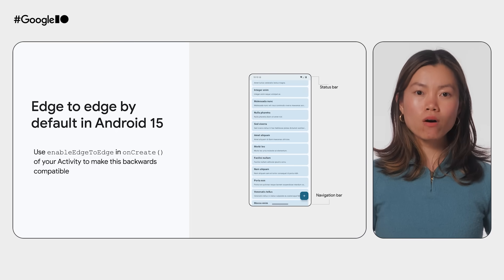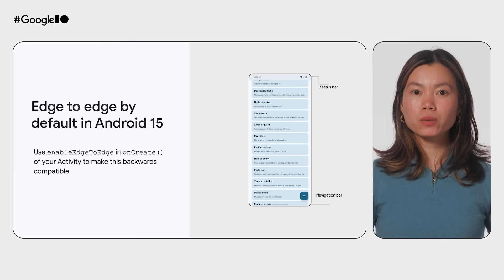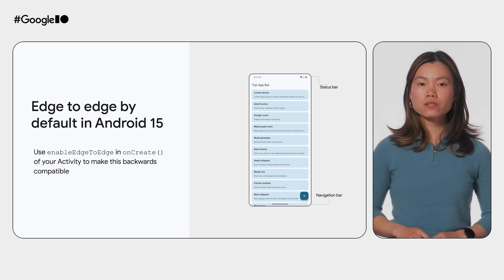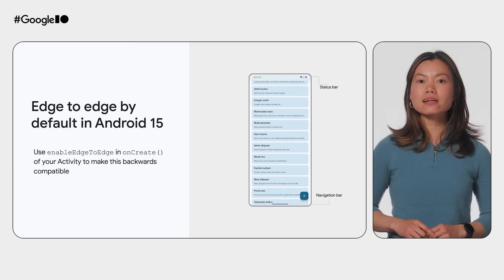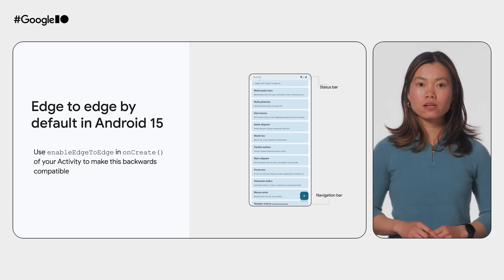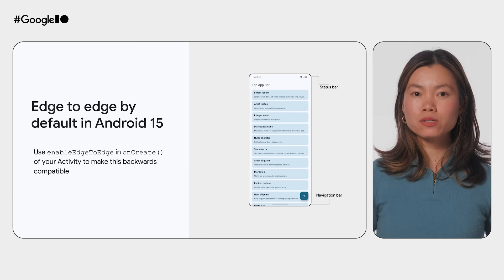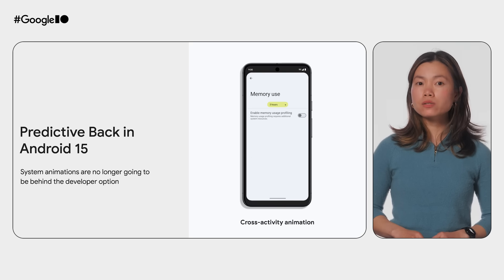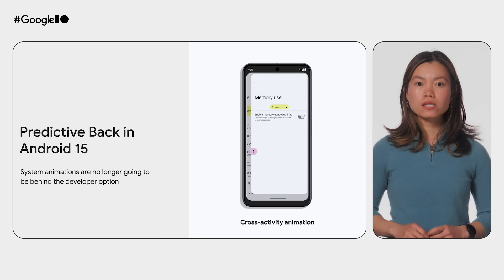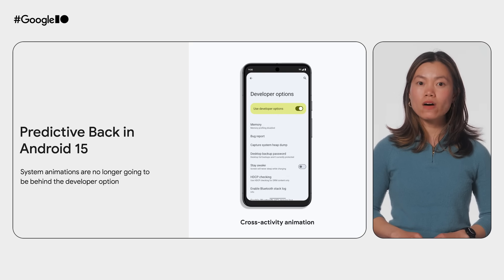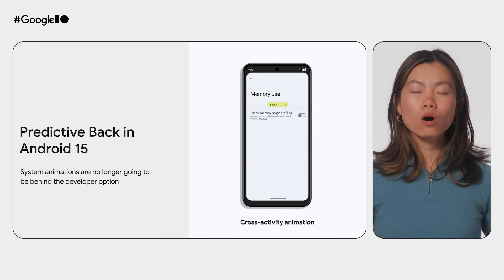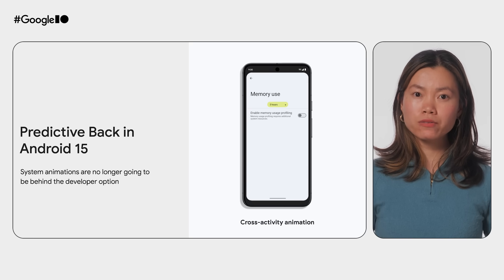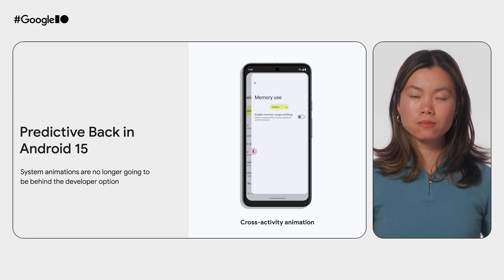Take advantage of the default edge-to-edge experience. Design your app's interface to seamlessly extend to the edges of the screen and create a visually immersive experience. Predictive Back is no longer going to be behind the developer option, which means users will be able to see helpful preview animations.